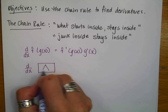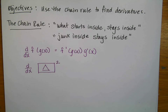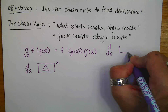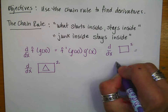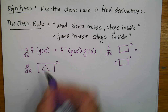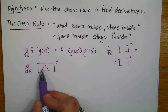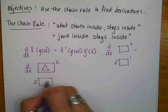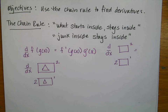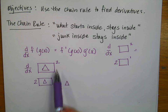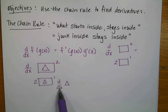Let's say I have a function and I have another function inside, and that function is squared. Let's go back and just do the derivative of the box. The derivative of a box squared would be 2 times the box to the first power — that's just the power rule. But now if I have stuff on the inside, here's how the chain rule works: what starts inside stays inside. So my triangle started inside, so it stays inside, and then I take the derivative of the triangle. I manage the whole thing first, and then I take the derivative of whatever's inside.